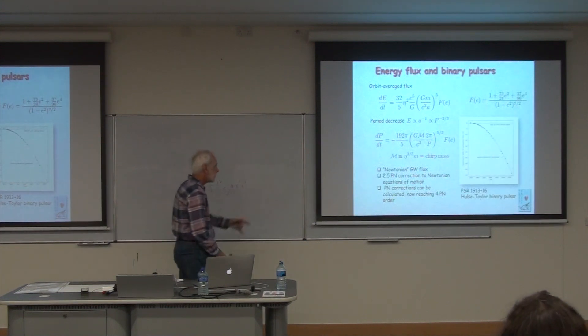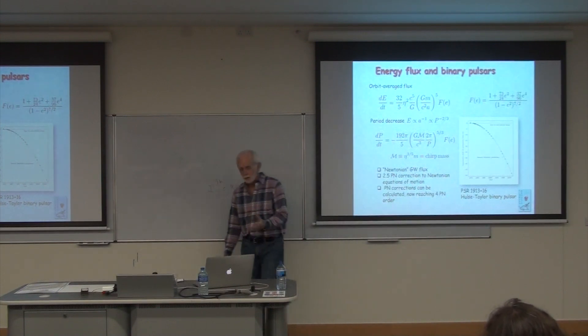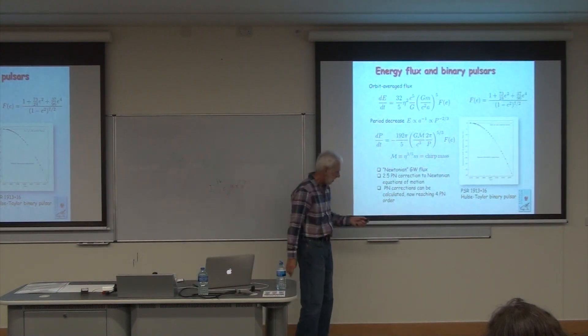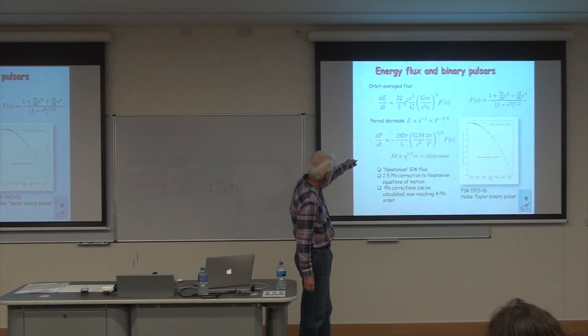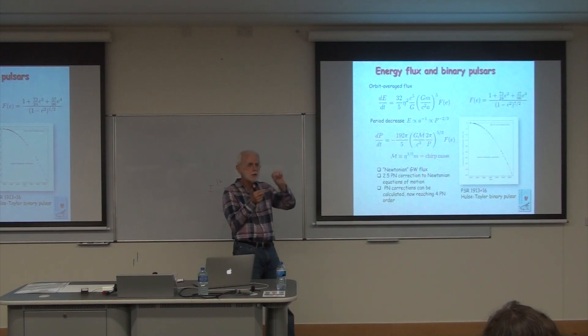Of course, this formula was famously verified in the Hulse-Taylor binary pulsar, and more recently with other binary pulsars. This is the quintessential verification. If p dot is given by this, so it's roughly a constant, then p will decrease linearly with time. If p decreases linearly with time, then the time at which the orbit reaches the same point in its orbit, periastron, will decrease quadratically with time.